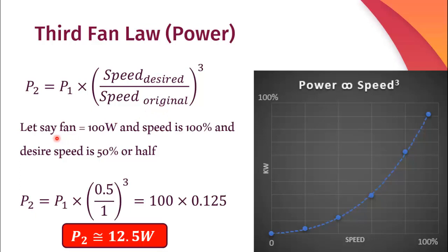Let's say the total power of the fan is 100 Watt at rated speed and now we want to reduce the speed to 50%. So after putting the values, the new power at half speed comes out to be 12.5 Watt, which is almost 8 times less power at the rated speed. So now if the fan consumes 8 times less power, it means that our electricity bill will also be reduced.